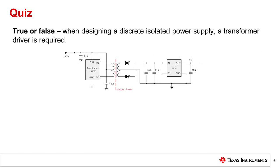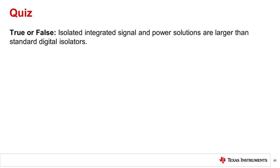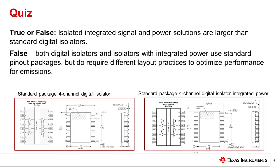True or false: When designing a discrete isolated power supply, a transformer driver is required. False. Transformer drivers are oscillator and gate drive circuits that simplify power supply design by providing an easy and reliable method to control the output voltage from very low voltages to higher voltages of 24 volts or more. LDOs help to provide consistent isolated power and prevent line regulation errors. Both are common solutions for isolated supplies, but they are not required. True or false: Isolated integrated signal and power solutions are larger than standard digital isolators. False. Both digital isolators and isolators with integrated power use standard pinout packages. They do require different layout practices to optimize performance for emissions.